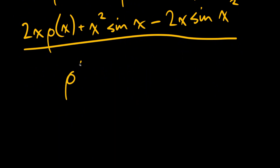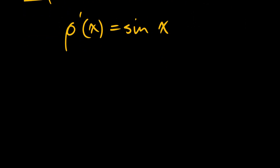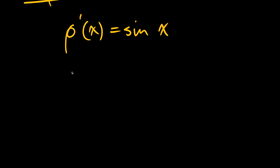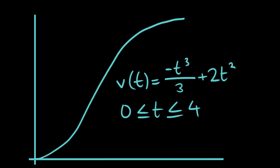p of x we could figure out with a bit of calculus using the trig functions. Since we know that p prime of x was sine of x, going backward would give you one of the trig functions, but we'd have to include the constant.